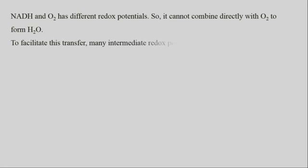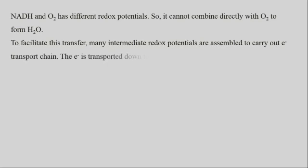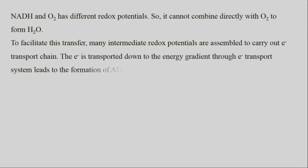To facilitate this transfer, many intermediate redox potentials are assembled to carry out the electron transport chain. The electrons are transported down the energy gradient through the electron transport system, leading to the formation of ATP by a process known as oxidative phosphorylation.